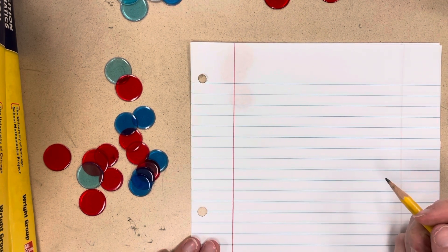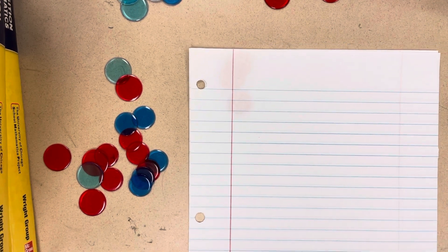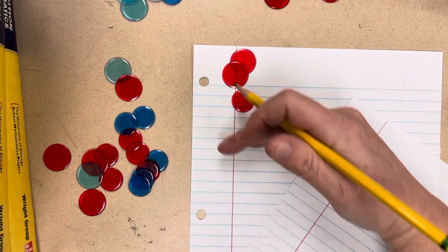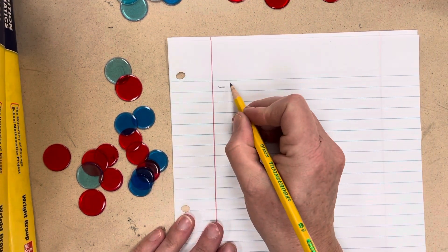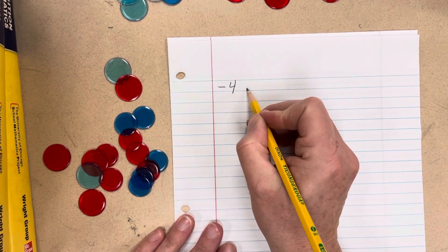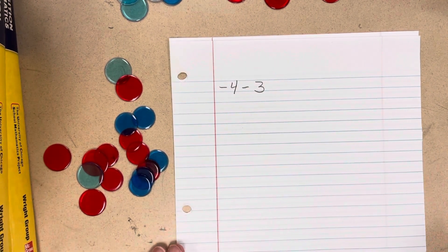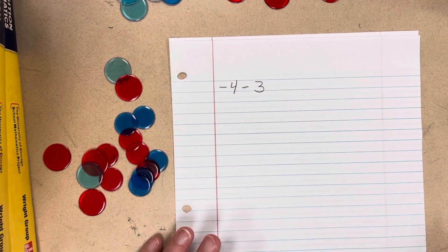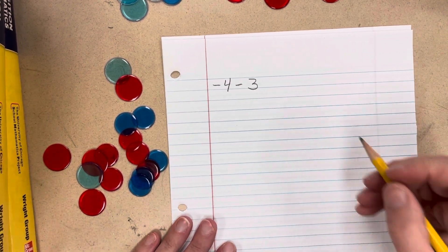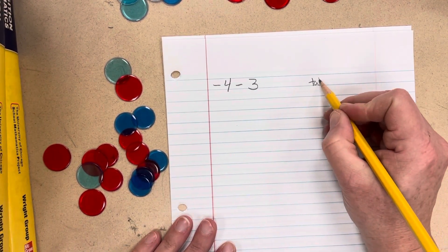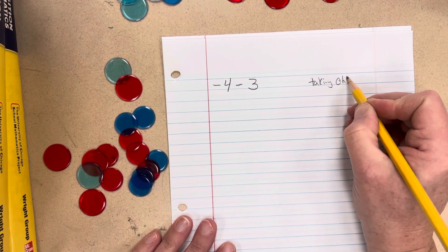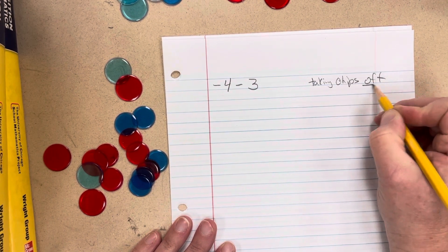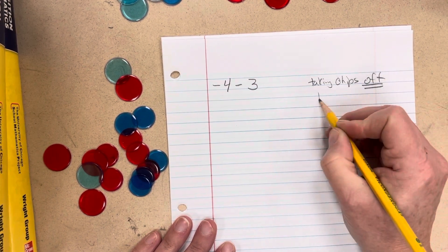Let's talk about subtraction. Let's look at a subtraction problem: what about negative four minus three? When we're subtracting, we're taking chips off the board.